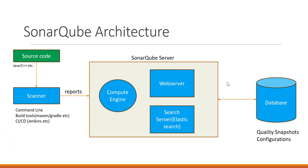The reports are sent to the SonarQube server. Even though the scanner runs on the client machine, it needs the server to download required files like quality profiles and configuration files. Once analysis is completed, the report is sent to the SonarQube server. The server has three components: the compute engine, the web server, and the search server. The compute engine takes the reports from the scanner, processes them, and stores the corresponding snapshot in the database. The quality snapshot contains the combination of measures, issues, and so on. The web server provides the user interface for viewing all these reports in SonarQube and for configuring various tasks in the server.